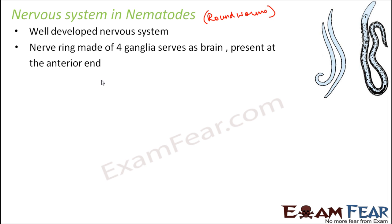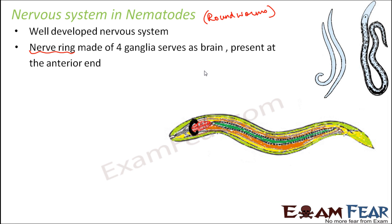Nematodes have a nerve ring made up of four ganglia that serves as a brain. It is a ring-like structure. Looking at the structure of a roundworm, you can see a ring-like structure formed by ganglia. The red-colored structure is the esophagus, and just before it is the black-colored structure — that is the nerve ring made up of four ganglia.